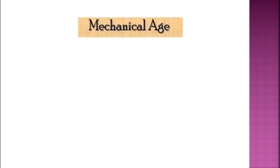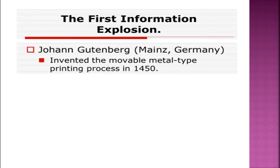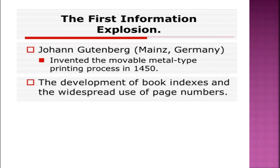The second age is the mechanical age, from 1450 to 1840 AD. It is the age when we first start to see the connection between our ancestors and current technology. Many technologies were developed in this era, including slide rules, the Pascaline, and Leibniz's machine. Charles Babbage developed the difference engine, which tabulated polynomial equations using the method of finite differences. John Gutenberg invented the movable metal type printing process in 1450, leading to the development of books, indexes, and widespread use of page numbers.